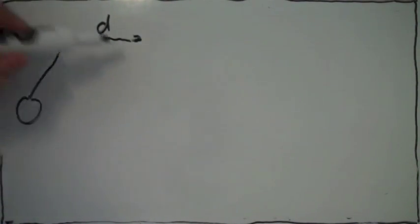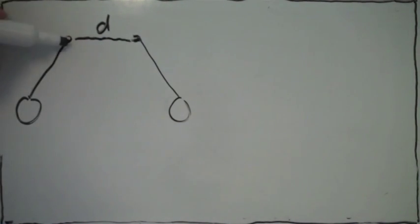In this problem, we have two masses that are hung from strings, and the pivots are a distance d apart, like this.